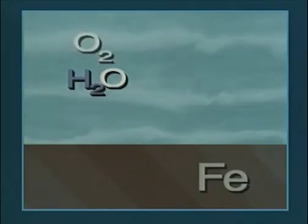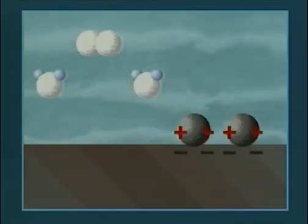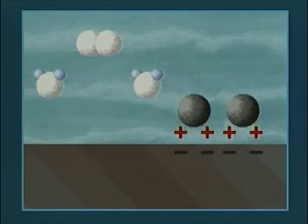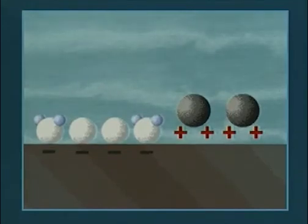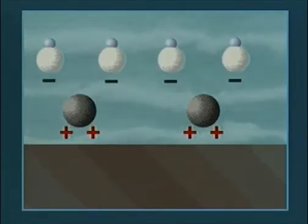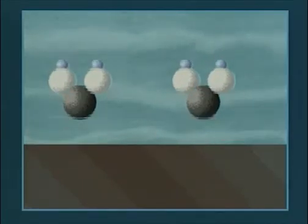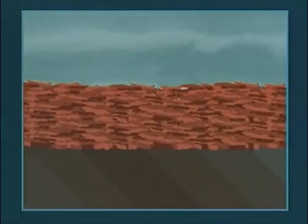If a piece of steel is put into aerated water, some iron atoms dissolve to form positively charged particles called ions. When this happens, the electrons left behind move through the steel to places where they can react with oxygen and water to form hydroxyl ions. These then react with the iron ions to form hydrated iron oxide, rust.